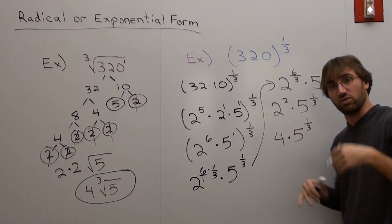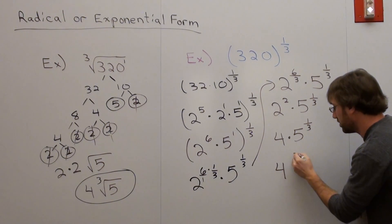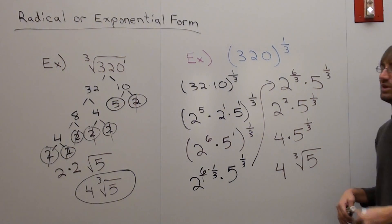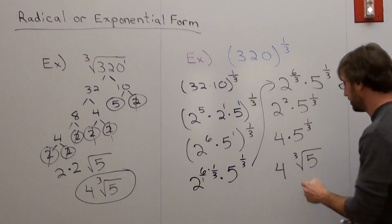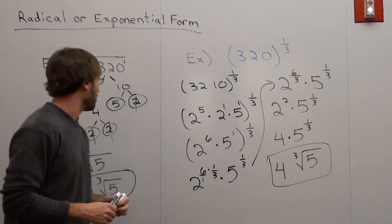But if I rewrite this in radical form, it's actually cube root of 5 to the first. And we don't put 5 to the first. There you go. Same exact answer, different approach.